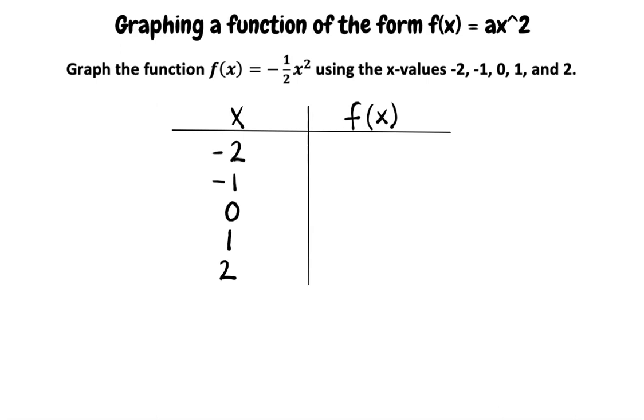Now, we will substitute each x-value into the function for x. First, we substitute -2 for x. It is very important to put parentheses around -2 because this helps us remember that we are squaring the negative as well as the 2. The function becomes -1/2 times (-2)².